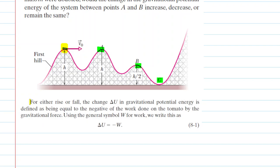We learn in this chapter that for either rises or falls, the change, delta U, in gravitational potential energy is defined as being equal to the negative of the work done by the gravitational force. In equation form, that statement amounts to this equation right here.